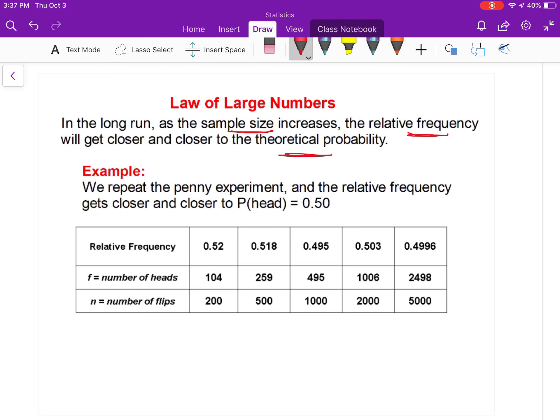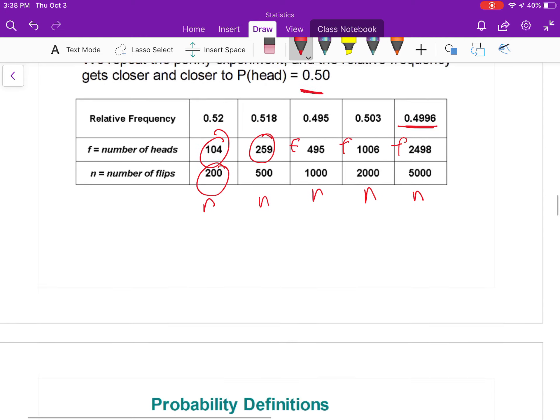For example, flip the coin 200 times, got 104. Make N a little bigger to 500, you end up with frequency at 259. N is 1000, N is 2000, N is 5000. Your frequencies keep changing as you flip the coin. The theoretical probability of getting tails is 50%. Well, after 5000 flips, 0.4996 is pretty close. That's the law of large numbers: the more you run an experiment, the closer it's going to be to the actual theoretical probability.